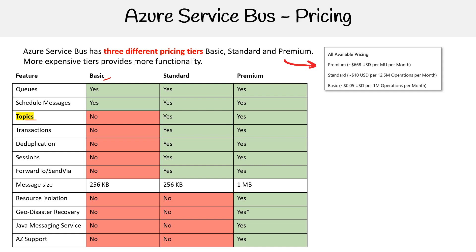The only way you're going to do that is by using standard, which we will do in the follow-alongs. Notice in basic, we don't get topics, transactions, deduping, sessions, forward-to-send, no resource isolation, geo disaster recovery, Java messaging support, AMQP support — and then some of those aren't supported in standard either.